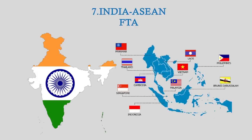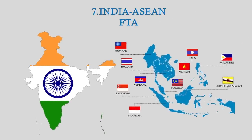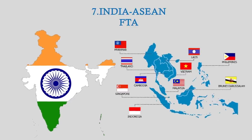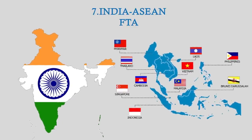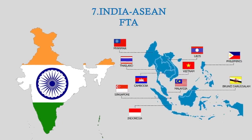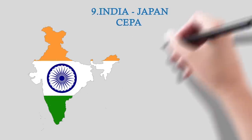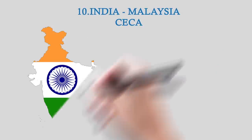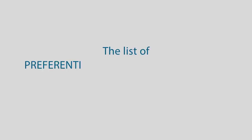India-ASEAN FTA — ASEAN countries include 10 Southeast Asian countries: Vietnam, Thailand, Singapore, Cambodia, Indonesia, Malaysia, Myanmar, Philippines, Laos and Brunei. Additionally, India-South Korea CEPA, India-Japan CEPA, and India-Malaysia CECA.